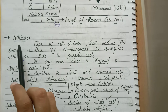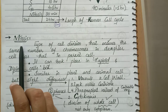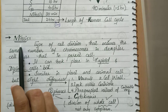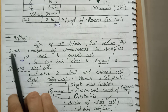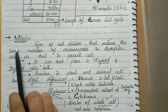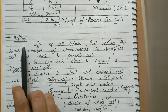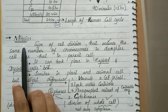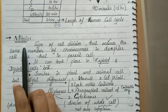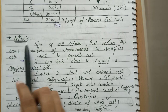Today our topic is about mitosis. So what is mitosis? It is the division process which we call mitosis. But meiosis is also a division process. So let's look at the definition of mitosis and meiosis.